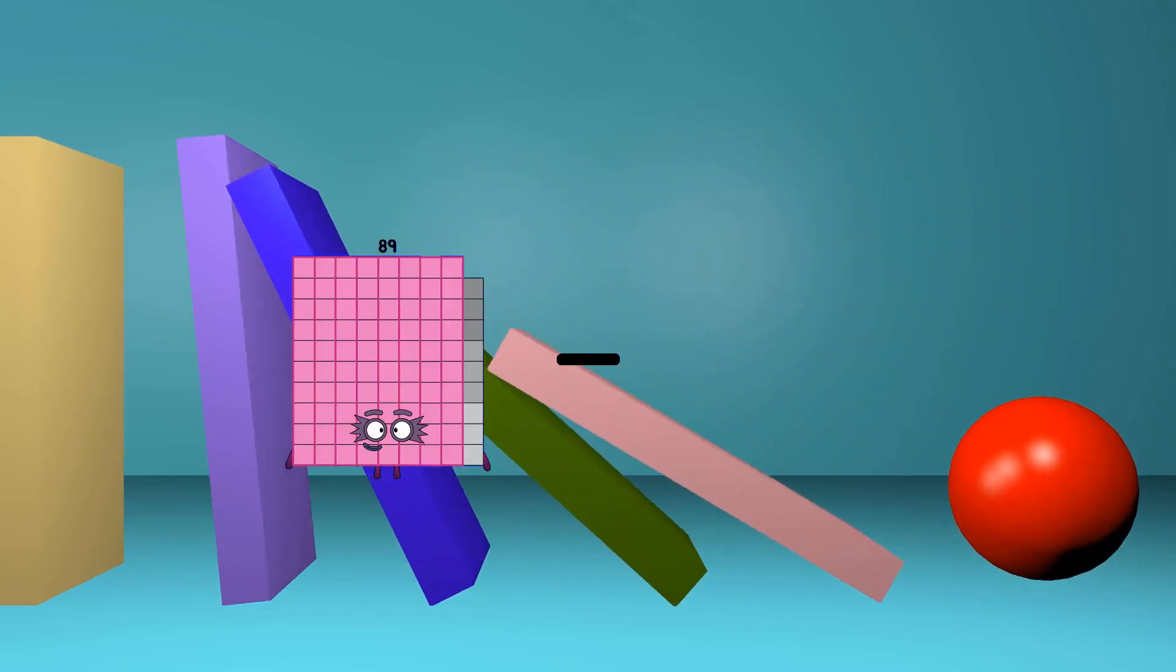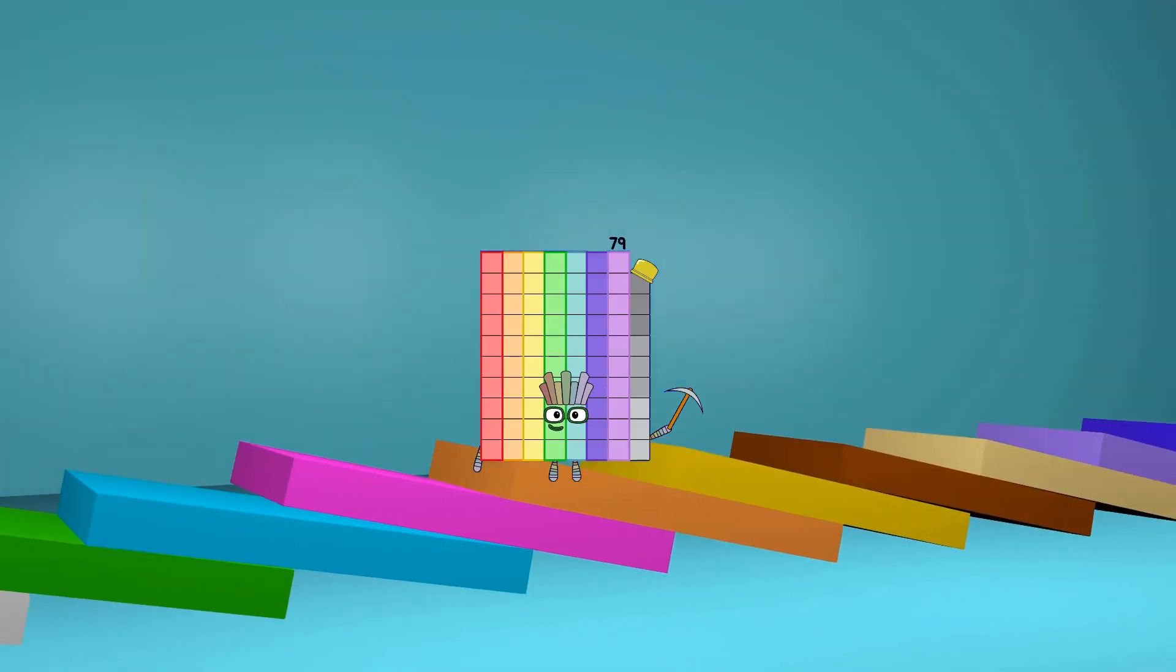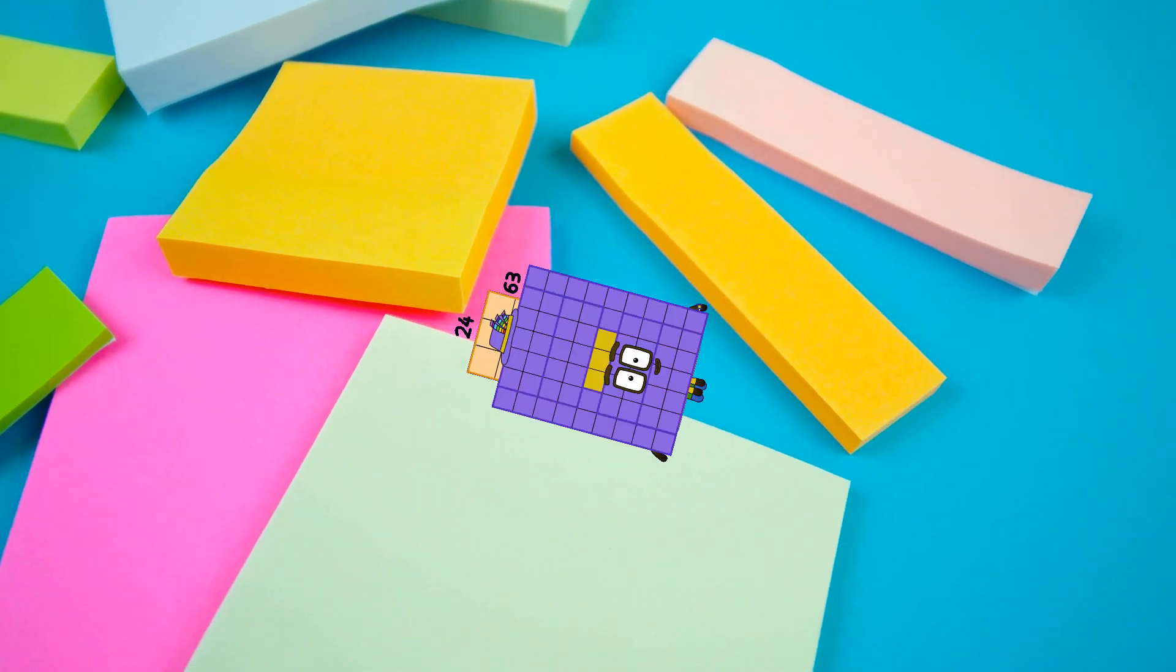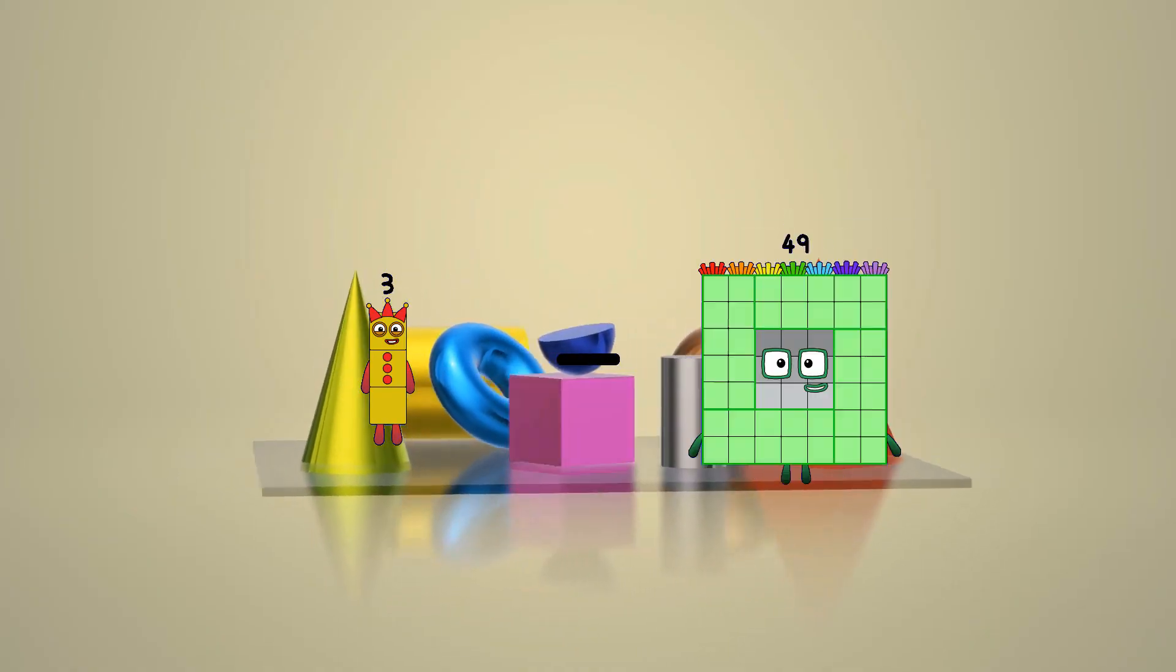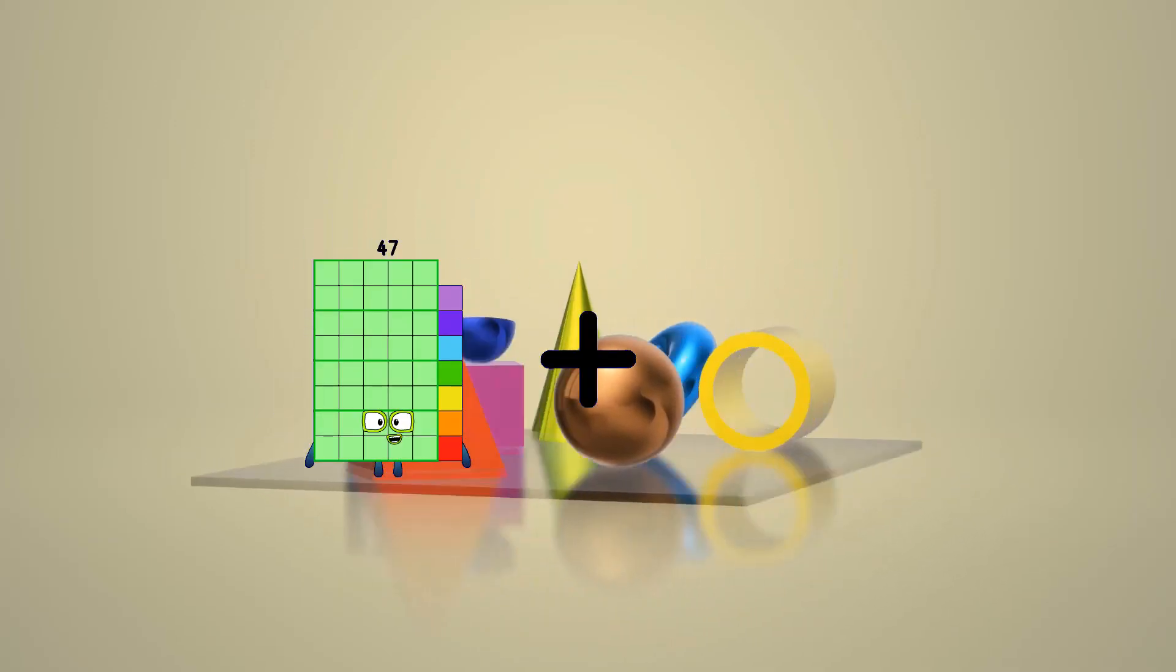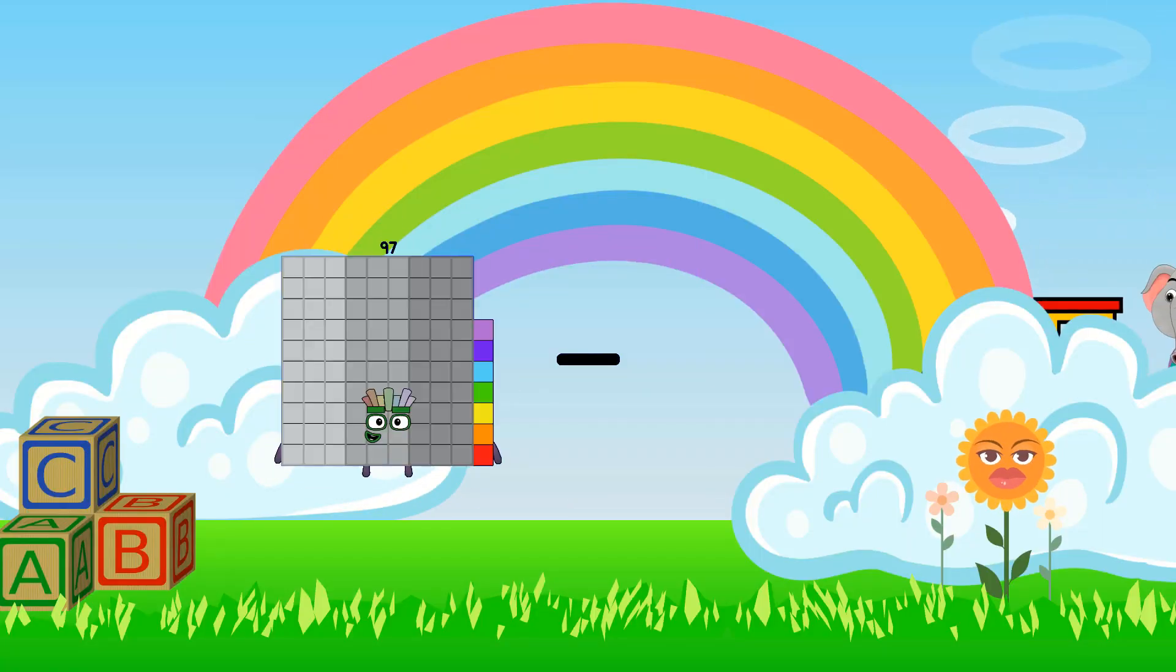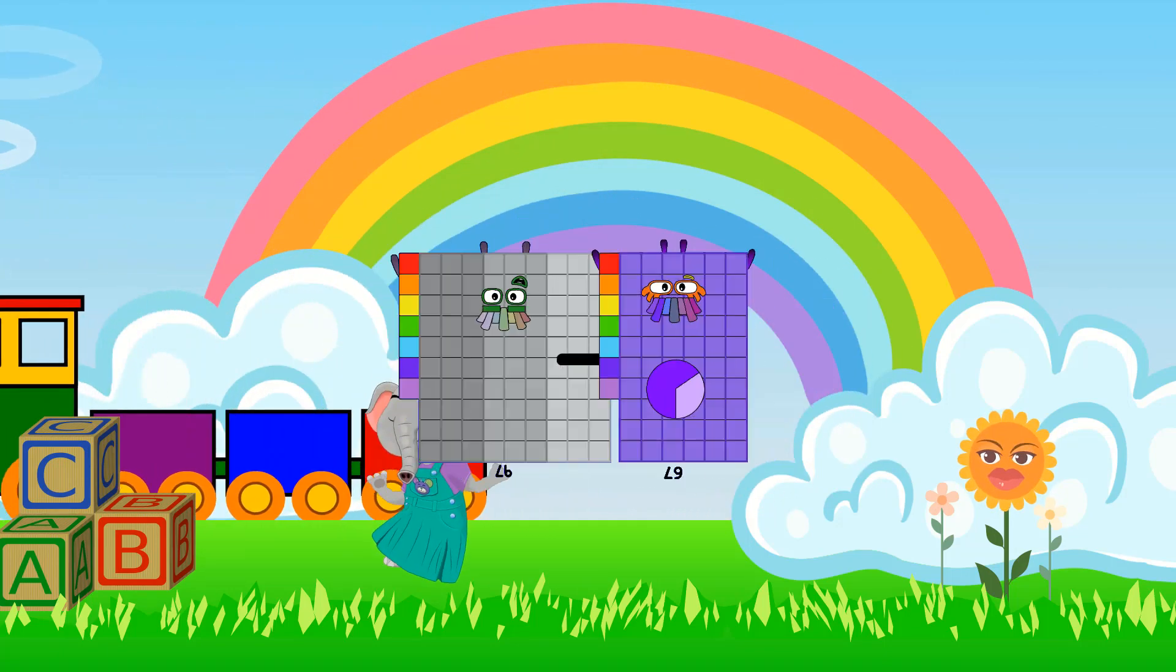89 minus 10 equals 79. 24 plus 63 equals 87. 3 minus 1 equals 2. 47 plus 75 equals 122. 97 minus 67 equals 30.